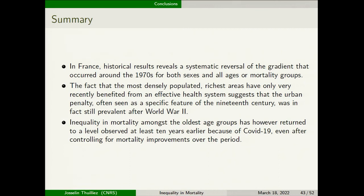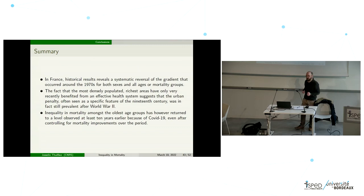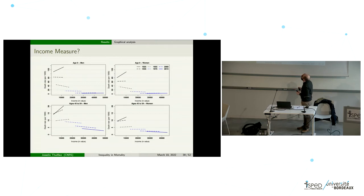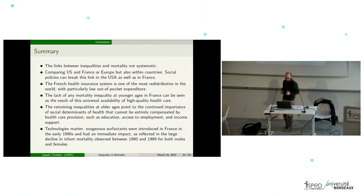In France, the historical results show that the reversal of the gradient was surprisingly very recent. There is probably an urban penalty still at play after the Second World War, and this is a question today because with COVID and more infectious disease we should understand what the effect will be on the distribution of mortality in France. The COVID crisis — since in this last study we go to 2020 — brings the gradient level back about 10 years, meaning inequalities probably increased a lot also with the COVID crisis.